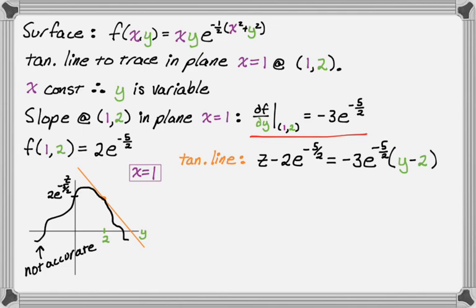But we really need to write it parametrically, because we're not in the y-z plane, we're in the plane x equals one. So parametrically, we just let x equal one. And then y is our independent variable, so we're going to let y equal t, the parameter. And then we're going to, for z, just let z equal that tangent line we just wrote. So I'm going to move over the 2e to the negative five-halves. So we get this.